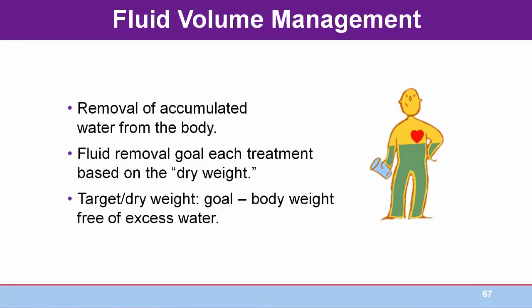In PD, fluid removal is accomplished with dextrose in the dialysate, which creates the osmotic force. The PD prescription for each patient will include the percent of dextrose dialysate needed. In hemodialysis, the machine is programmed for ultrafiltration that occurs within the dialyser as water is forced from high-pressure blood circulation to lower-pressure dialysate fluid. The amount of fluid to be removed during each treatment is based on the patient's target or dry weight — the patient's goal body weight free of excess water. PD patients weigh themselves daily; home hemodialysis patients weigh themselves before and after each treatment. With more frequent dialysis, these patients typically enjoy fewer problems with fluid volume management.